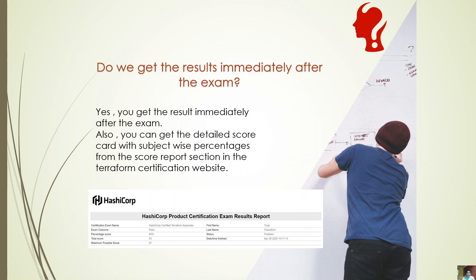Do we get the results immediately? Yes, you get the result immediately, and you also get a detailed scorecard with section-wise percentages. For example, in my scorecard you can see the total score is 53, the maximum score was 57, so I got 53 out of 57 — that's 93%, and the exam outcome is a pass.